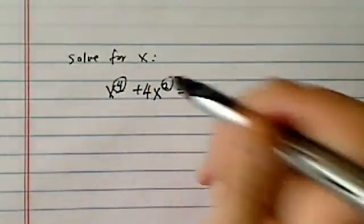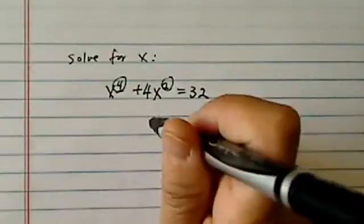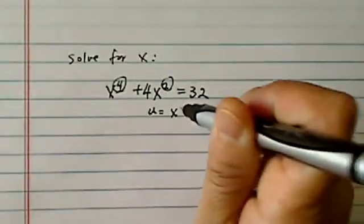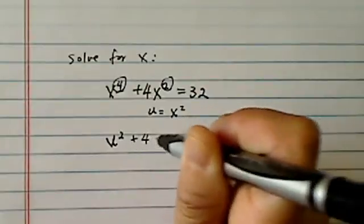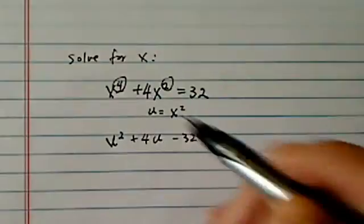The fact that this is 4, this is 2, it screams at you using substitution. So then I have u² + 4u - 32 = 0.